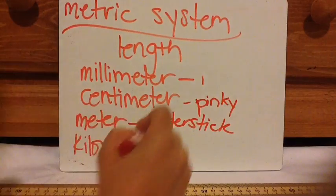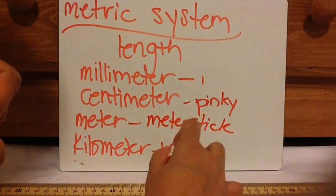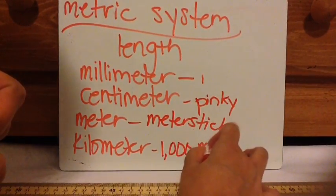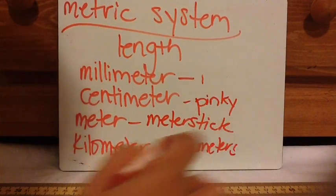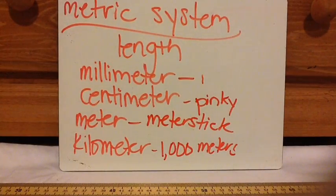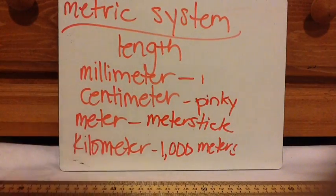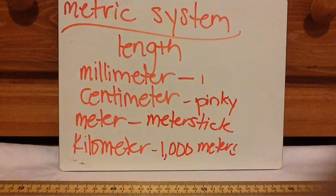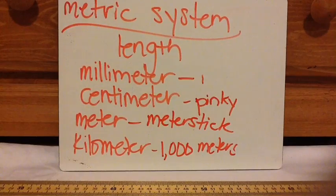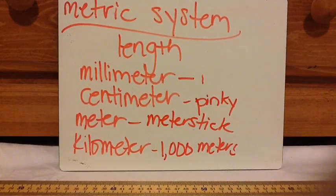And then a kilometer is actually 1,000 meters. Imagine a thousand of those meter sticks next to each other — that's a kilometer. This is used for driving distances. Like I mentioned in other videos, when I traveled to Europe and Dubai, they tell you how many kilometers to the next city. So that's kind of like our equivalent to miles.